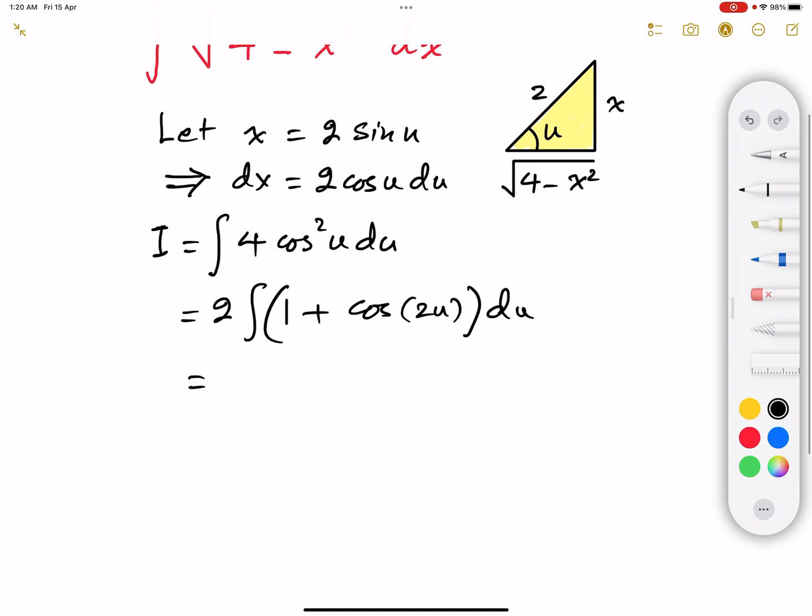And this is very simple and straightforward. This is going to give us 2u plus cosine 2u is sine 2u divided by 2. But we have 2 outside, so that's going to give us sine 2u plus c.